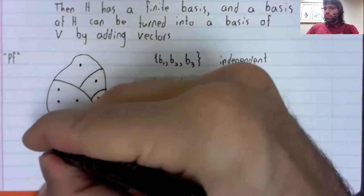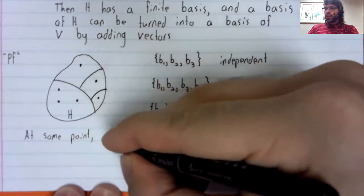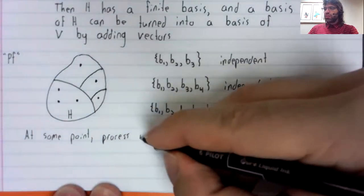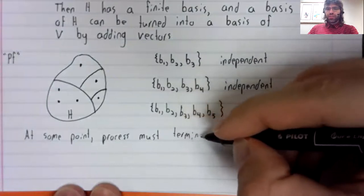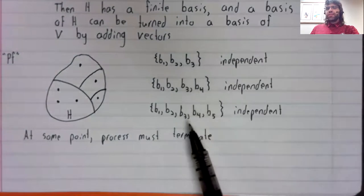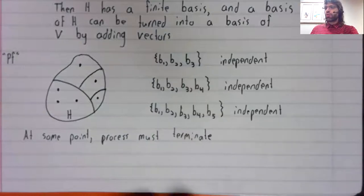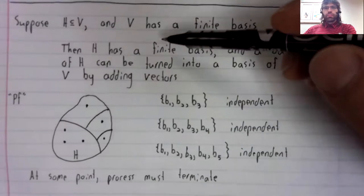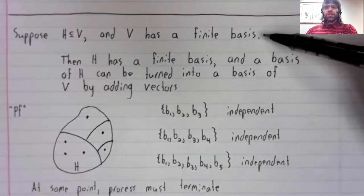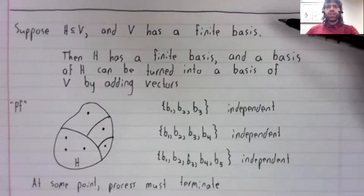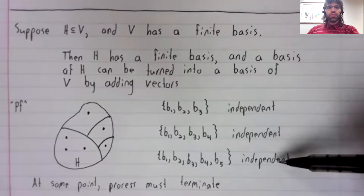Add it to the set. Well, at some point, this process must terminate. We can't keep adding new vectors forever. Why not? Because V is finite dimensional. The dimension of V provides an upper limit to the number of independent vectors we can have.